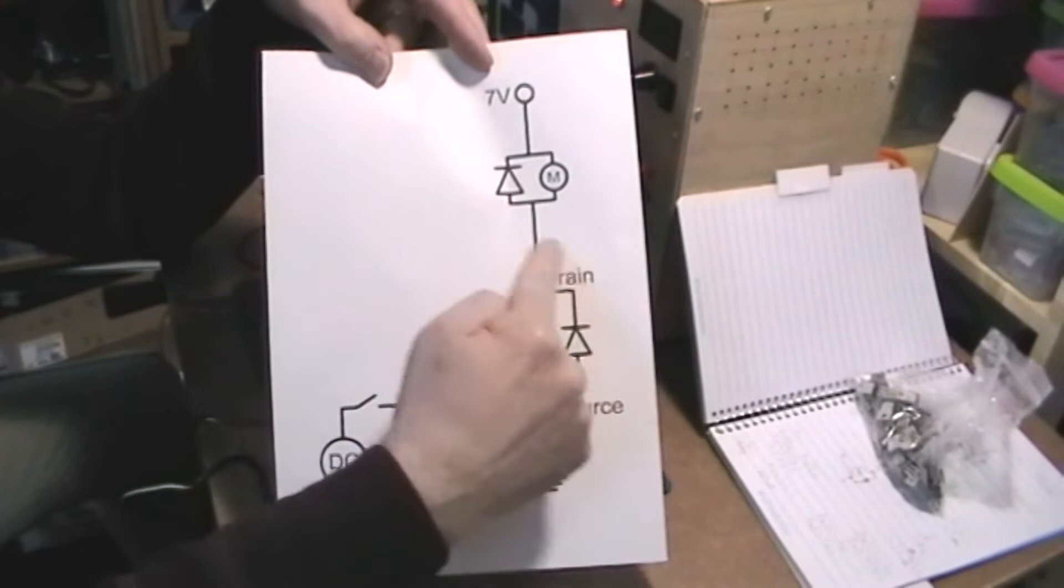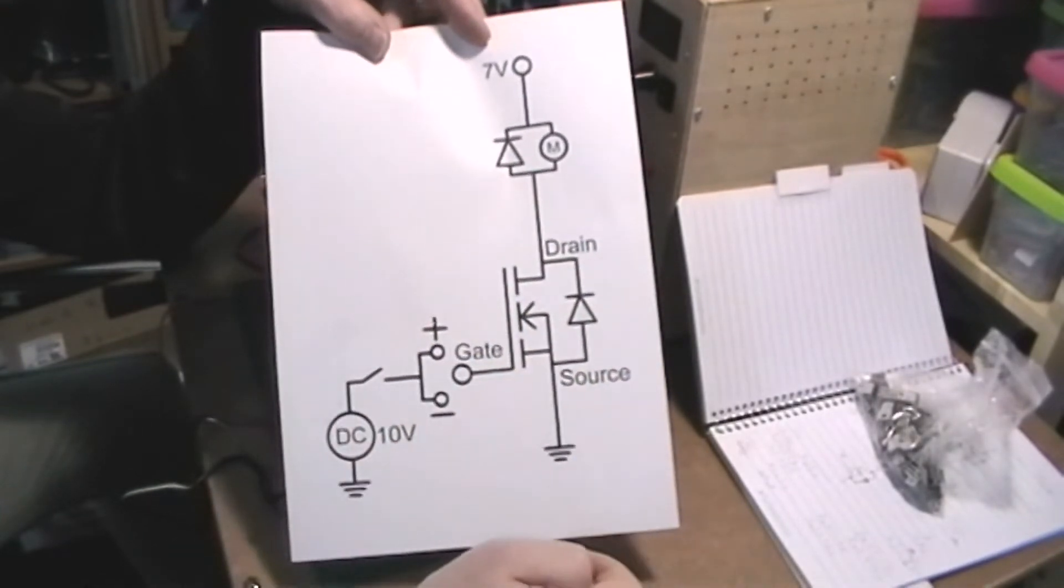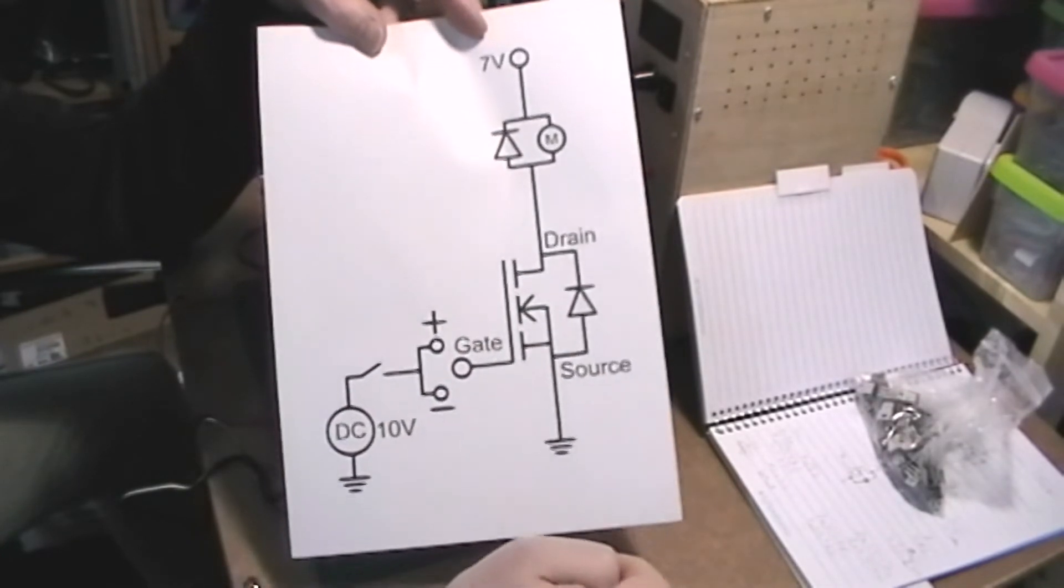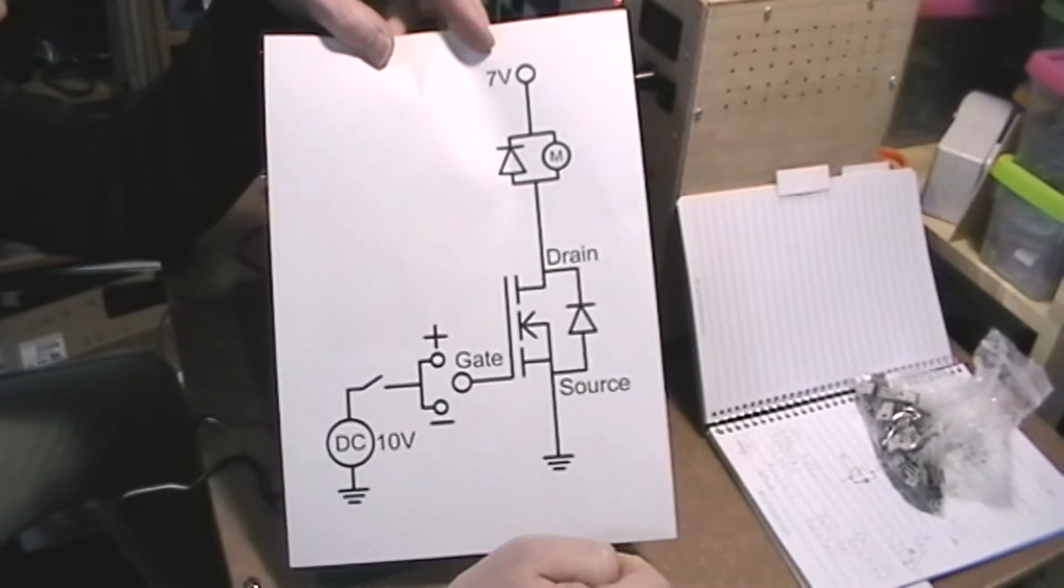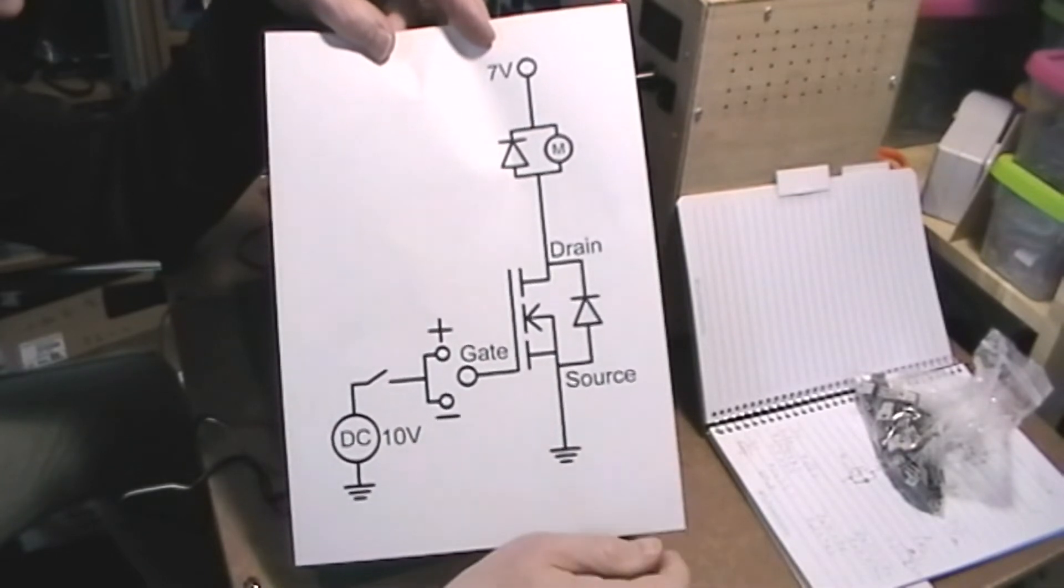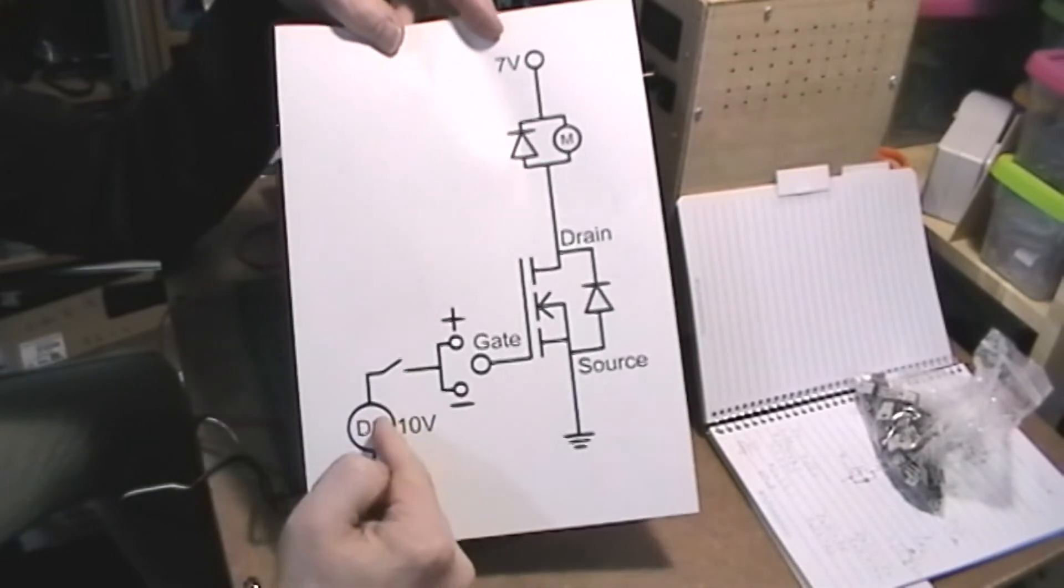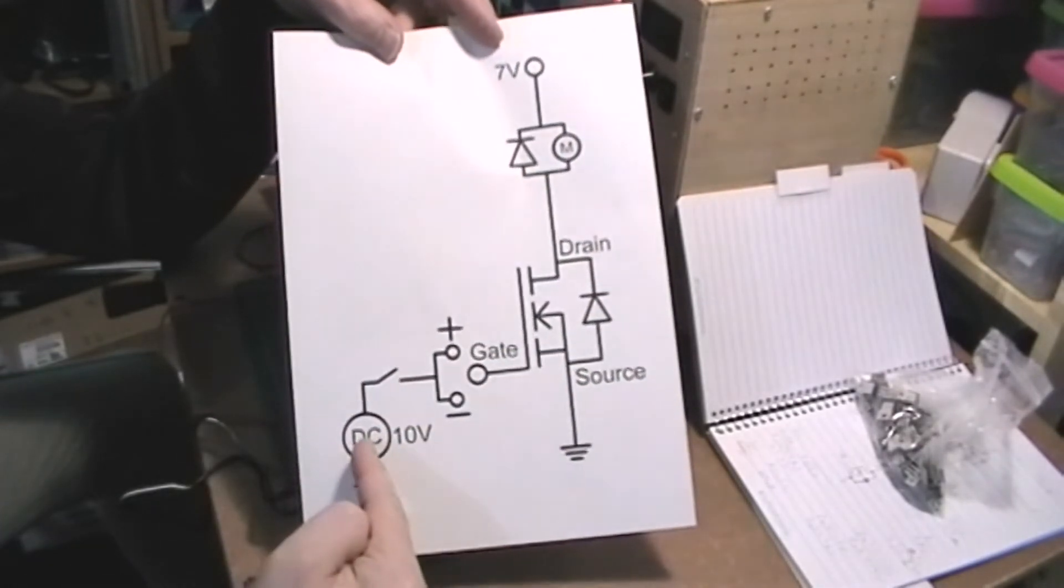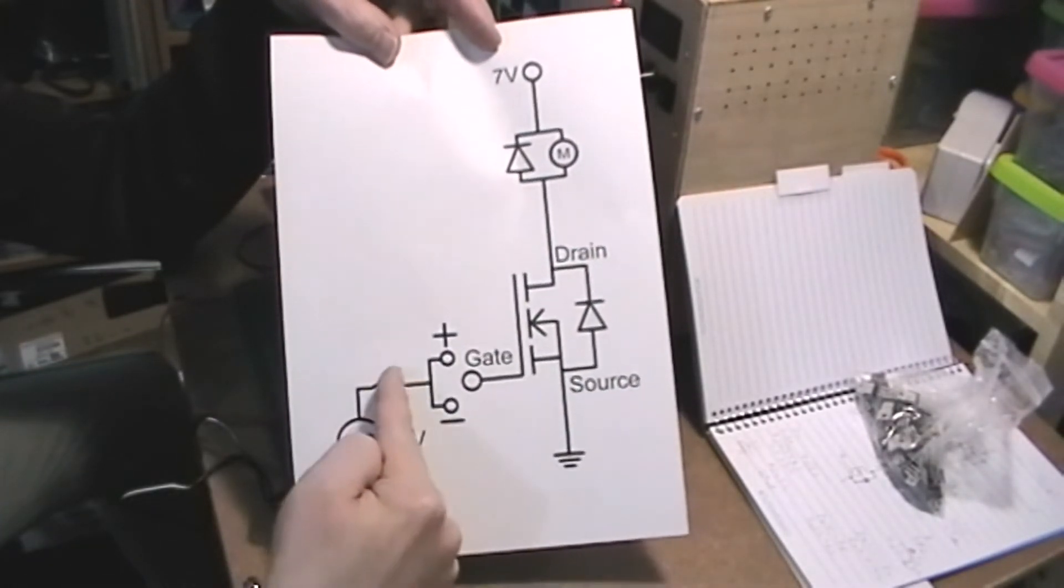Then this is actually the MOSFET that I'm working with. It's an N channel. And it does actually have its own internal diode in there for some circuit protection. I don't want it to blow up. And then on this side I've got a DC power supply. I've got 7 volts there from one power supply and then another DC 10 volts which is going to come to my gate.